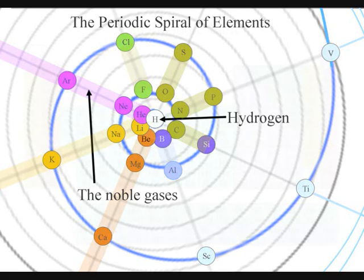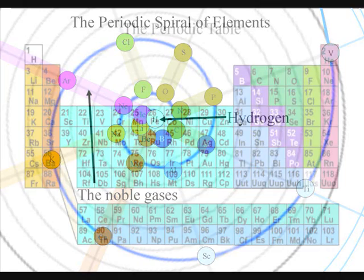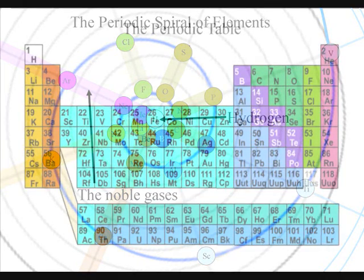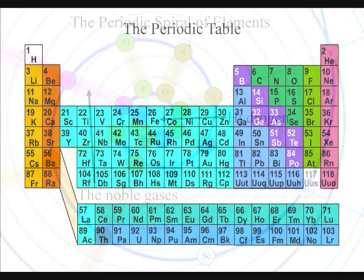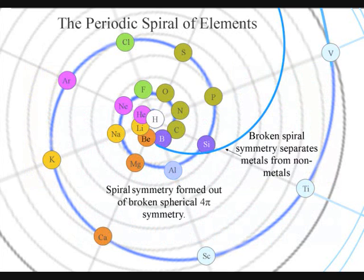In the traditional periodic table, there is a problem of where to place hydrogen and helium. They can be placed on the left-hand side because of their electron configuration, or they can be placed on the right-hand side. But by placing hydrogen in the centre of a spiral, we solve this problem.